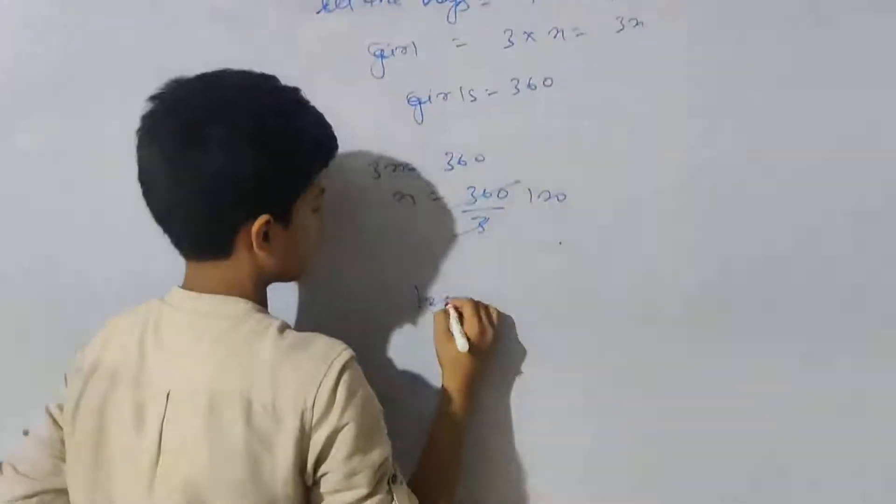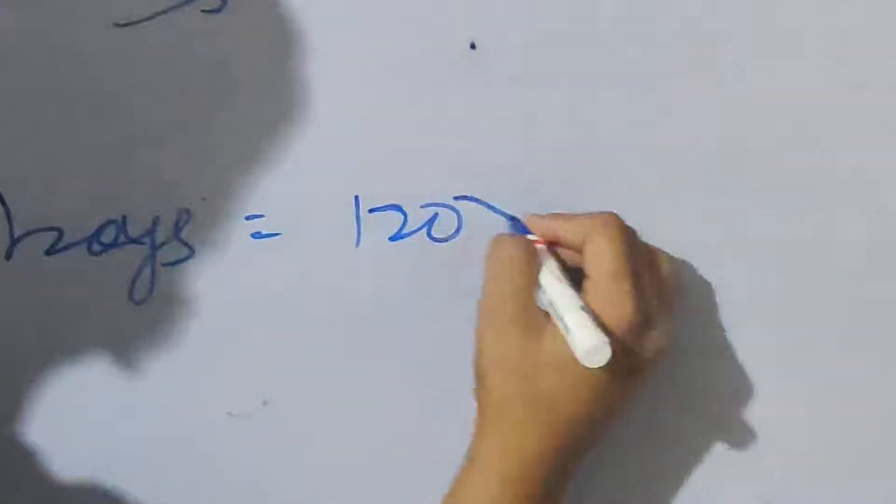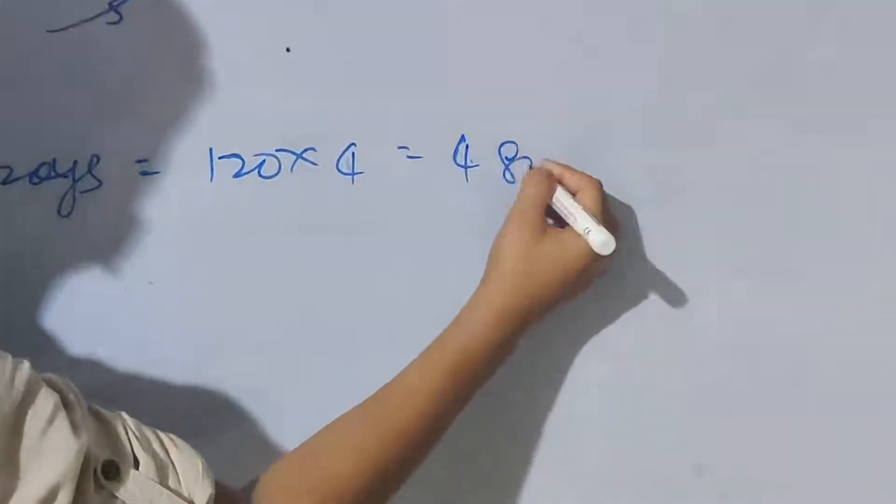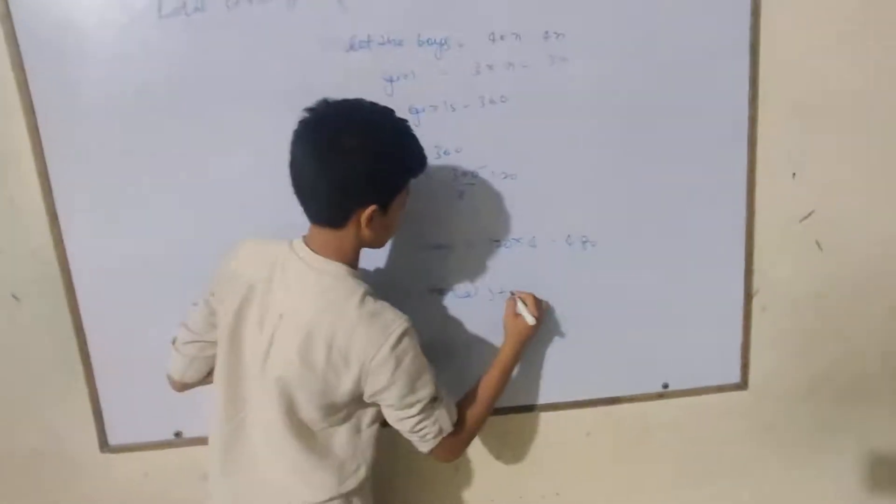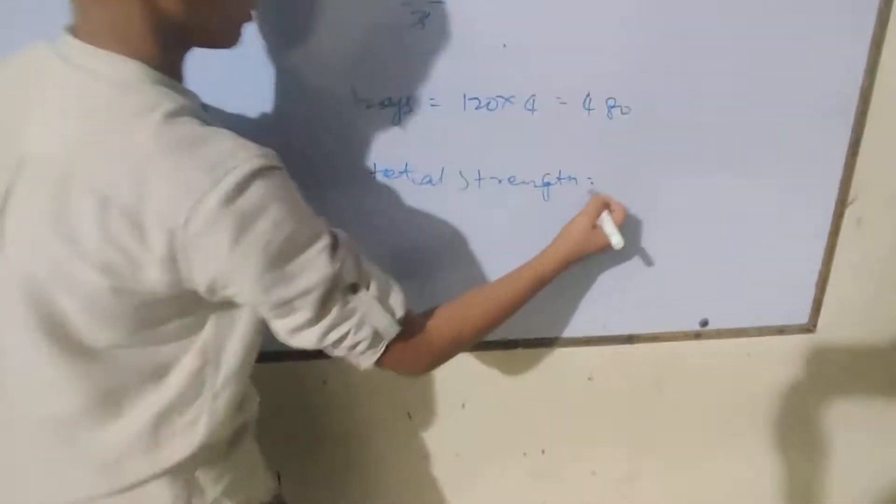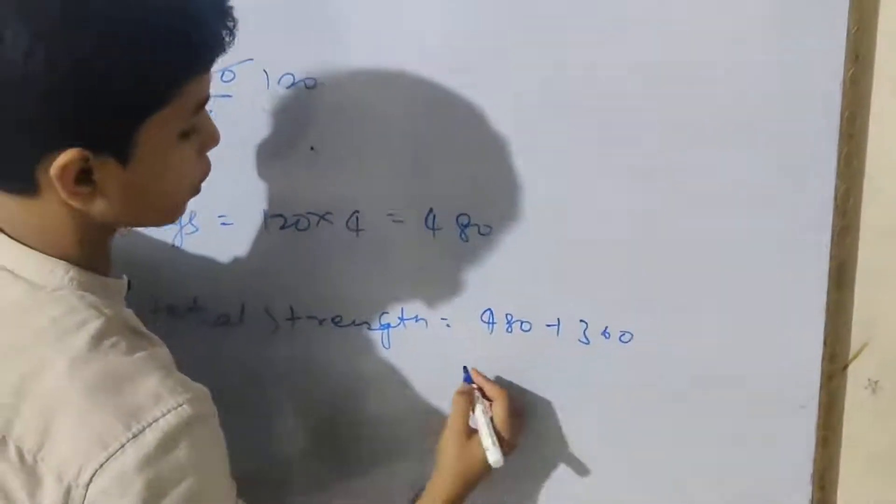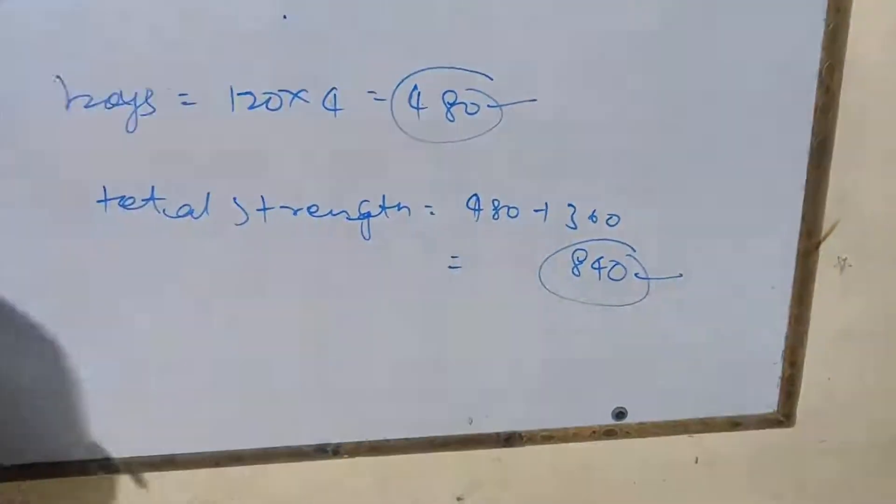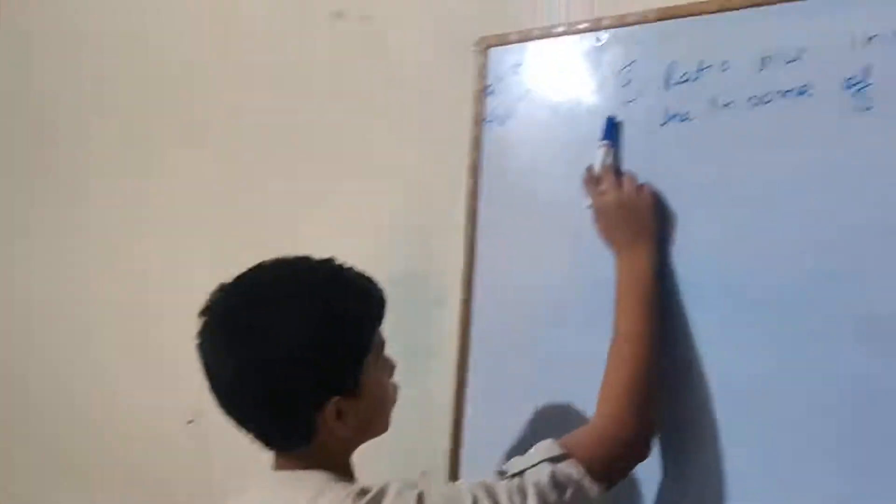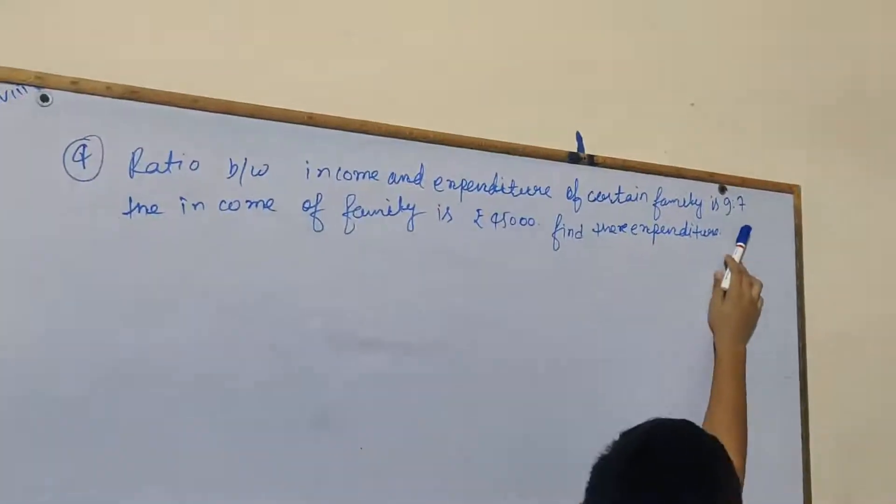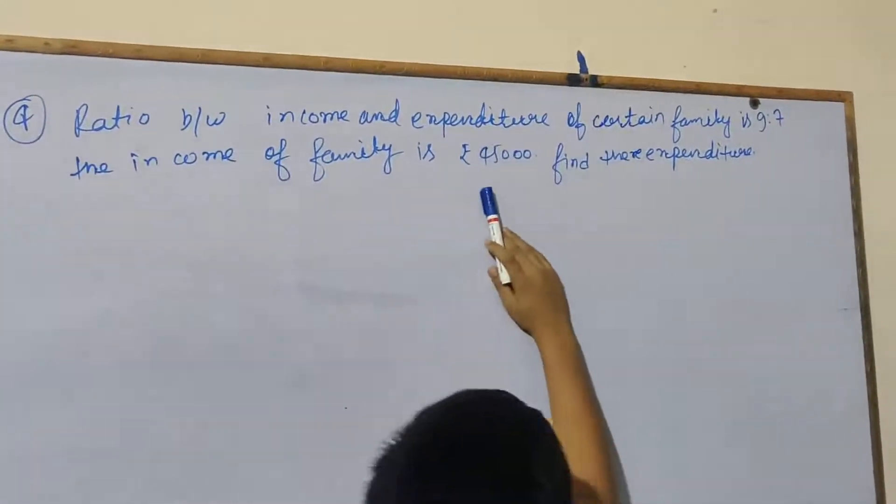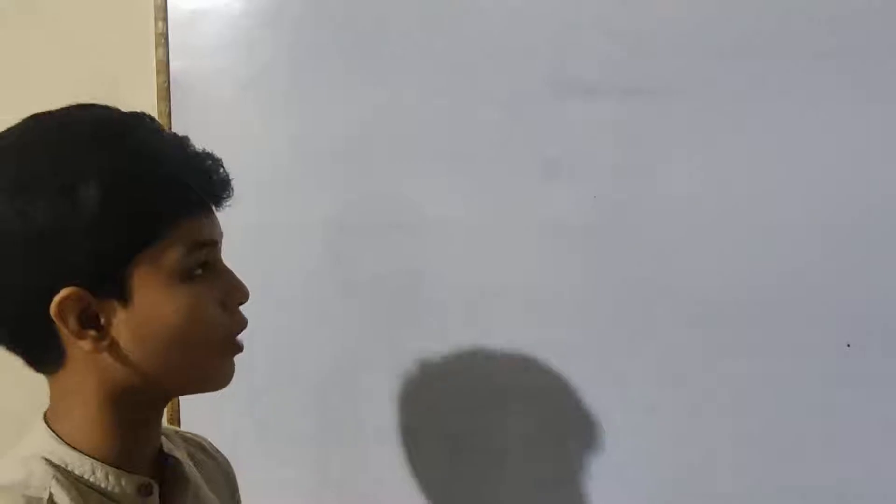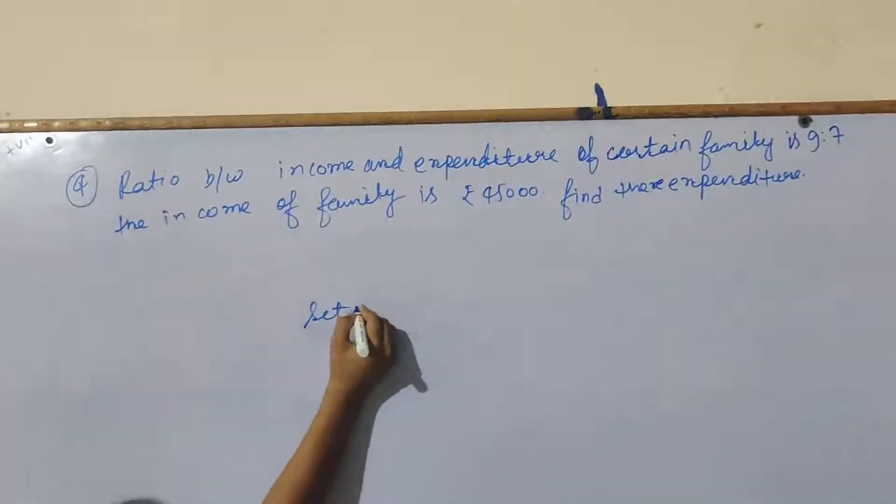Girls equal 360. 3X equals 360, so X equals 360 divided by 3, which equals 120. Boys will be 4 times 120, which equals 480. Total strength is 480 plus 360, which equals 840.